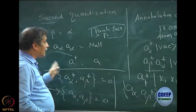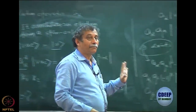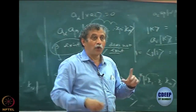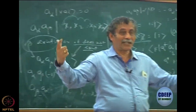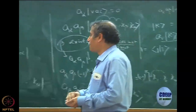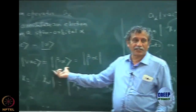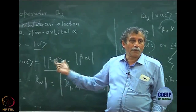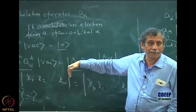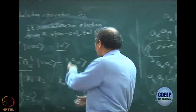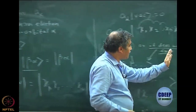Once we have all the anti-commutation relations between creation and annihilation operators, we will see how to use them in quantum chemistry. It is very clear that in constructing wave functions they are extremely powerful — we do not have to bother about antisymmetrizing, because by definition when constructing the state using creation operators it is already antisymmetric.